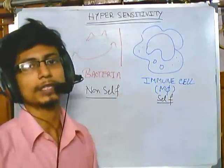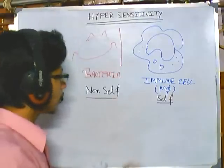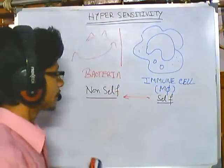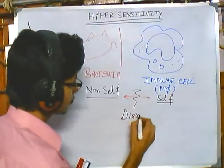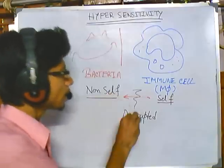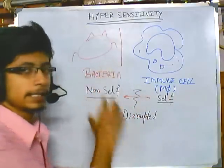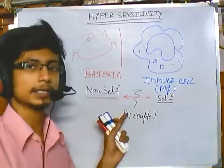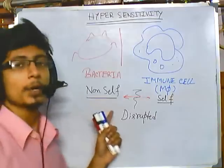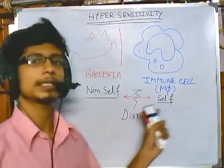Sometimes this ability to distinguish between non-self and self gets disrupted. When it is disrupted, the immune cell cannot recognize its own particle, or it cannot recognize the non-self particle. If it cannot recognize a non-self particle, it does not kill it, so the non-self particle stays longer and keeps damaging us. This kind of system is called an immunocompromised or immune-failing system.